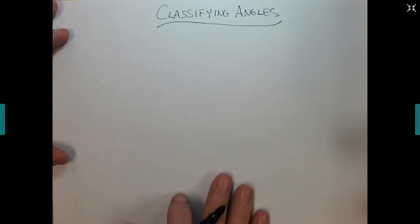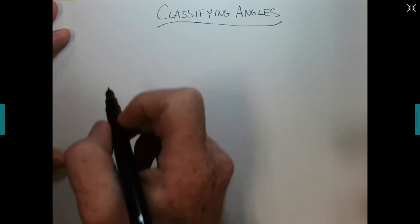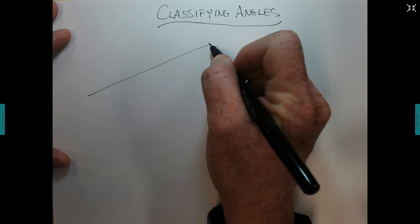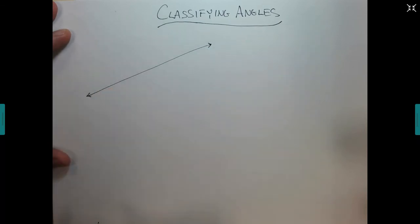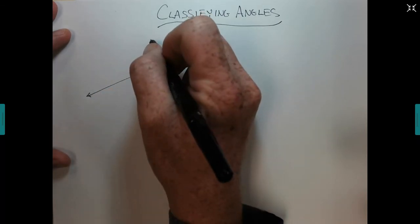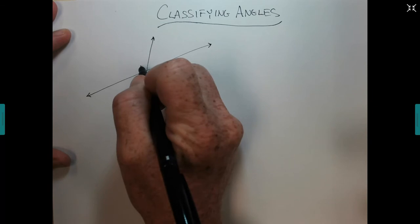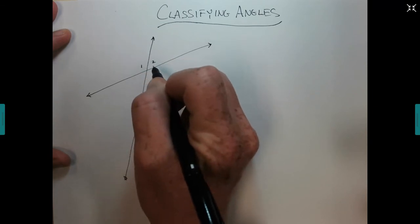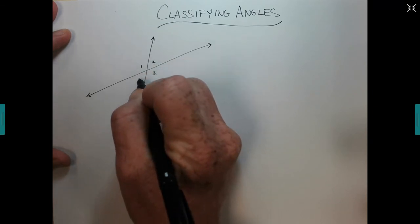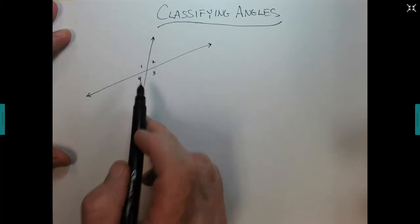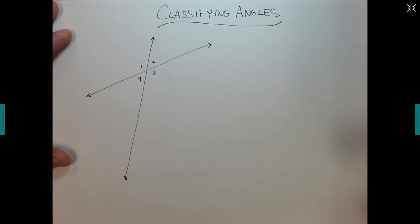Let's talk about classifying angles. Let's start off with some of the stuff that we've already covered. If we have two lines intersecting, then four different angles have been formed here: one, two, three, and four. We've already talked about relationships amongst these angles.